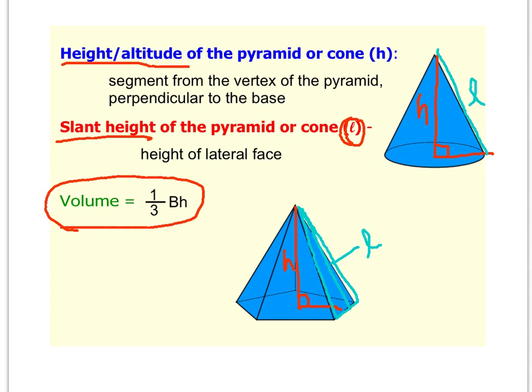So when we are looking at pyramids and cones, the volume formula, again, very similar to cylinders and prisms, it just has a one-third multiplied by the area of the base, then times the height of the pyramid or cone. So let's look at some examples.